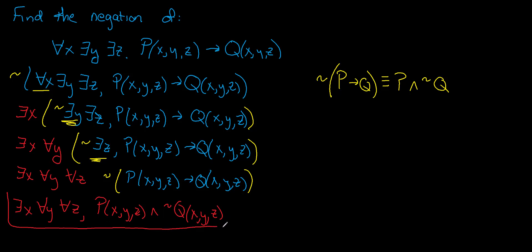And this would be my final answer. So the process, even if we have three variables or four variables, stays the same. We just start from the outside and we chip away at each layer, bringing that negation through as we work.